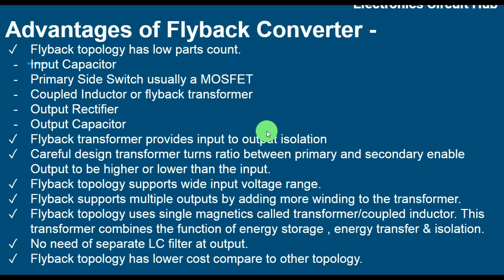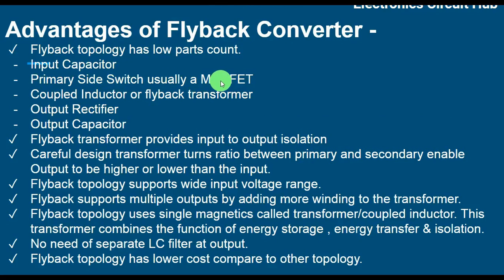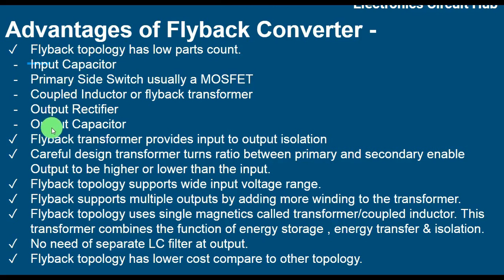Let us discuss the advantages of flyback topology. Flyback topology has a low parts count, as seen in the schematic — it includes an input capacitor, a primary side switch (usually a MOSFET), a coupled inductor also called a flyback transformer, an output rectifier, and an output capacitor. Another key advantage is that the flyback transformer provides input-to-output isolation, which is the main benefit of the flyback transformer.